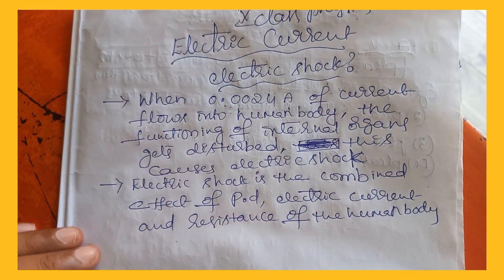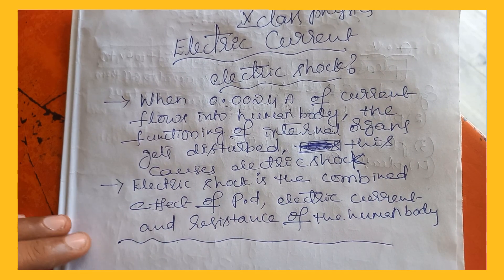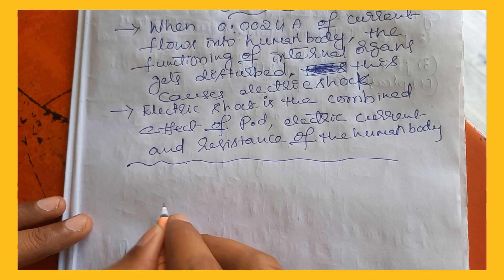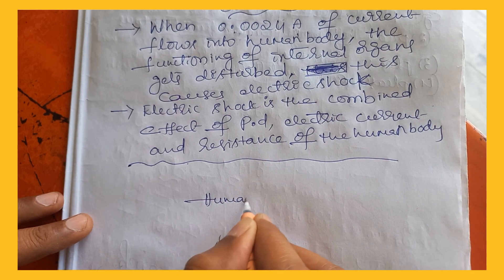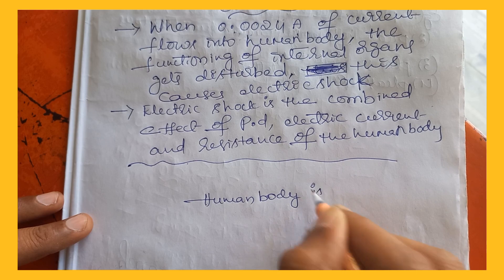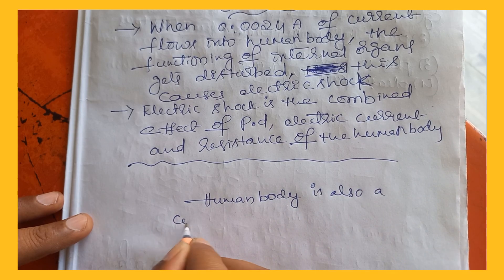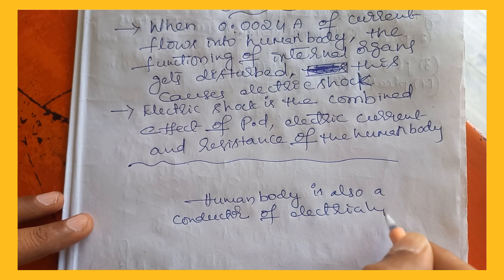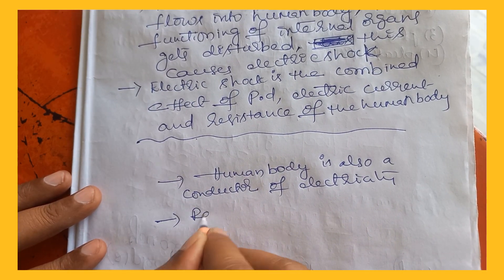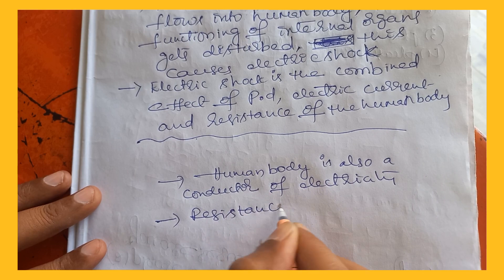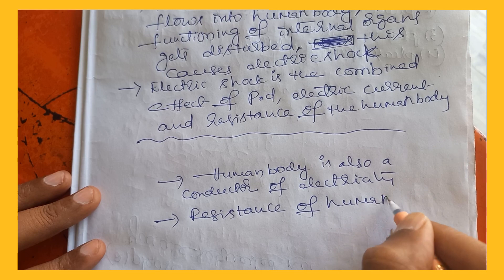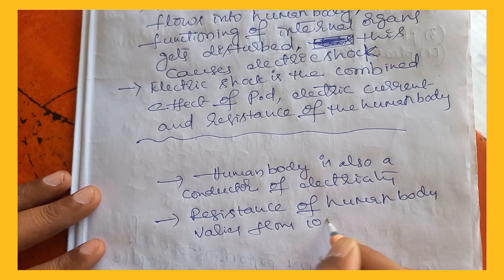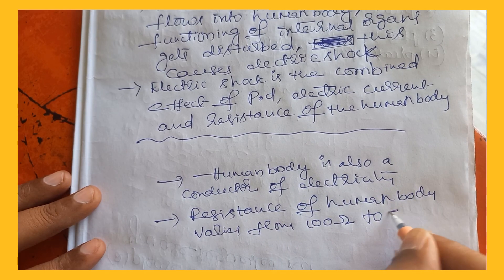The human body is a good conductor of electricity, so the human body is also a conductor of electricity. The human body also has a resistance. The resistance of the human body varies from 100 ohms to five lakh ohms.